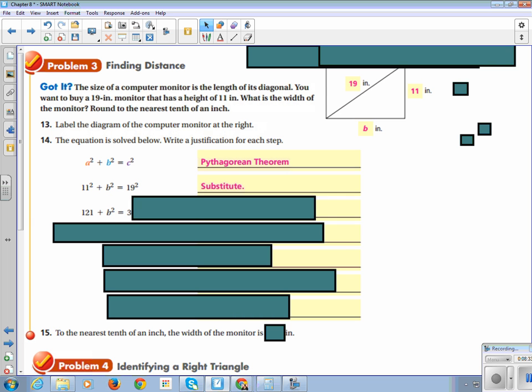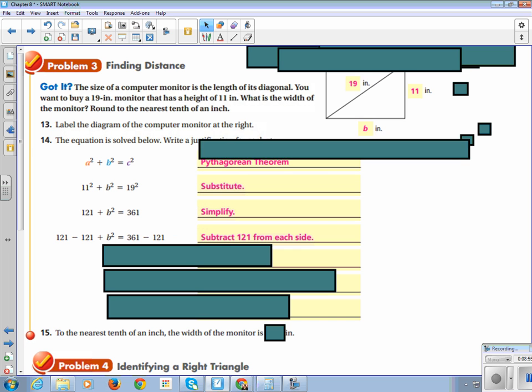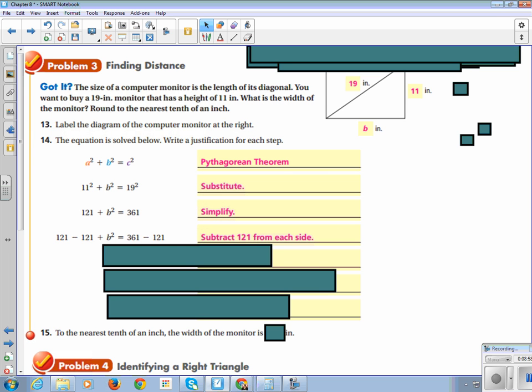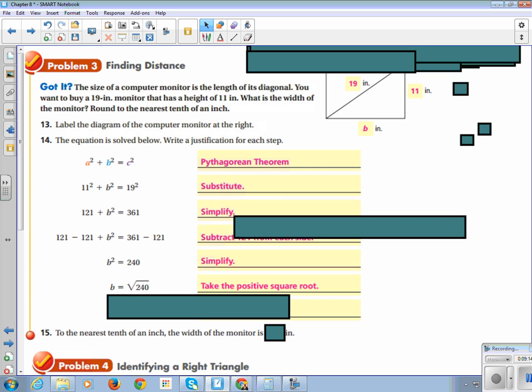We said that 11 squared is 121, and 19 squared is 361. That is simplifying our problem. Then, we are subtracting 121 from both sides, so we can get B squared by itself. This is the subtraction property of equality, or you can just take one from each side. Then, we get B squared equals 240. That is also simplifying. Then, we take the square root of both sides.